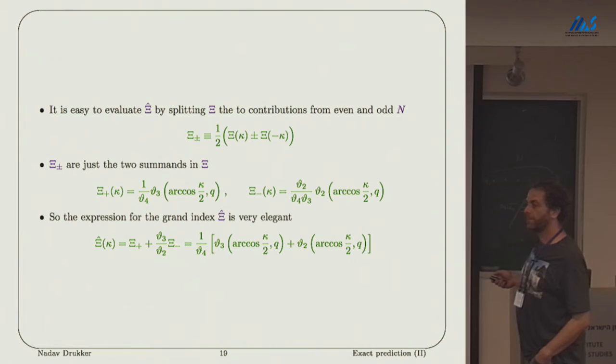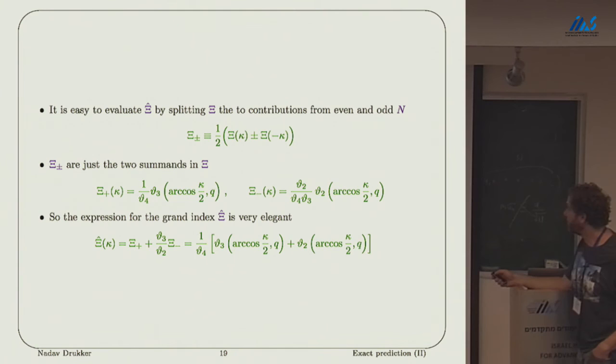Even this pre-factor in front here cancels, and I just get a sum of two theta functions. This is the generating function for all. In this case I don't have a flavor fugacity. In general, for what I will do later for a circular quiver, we have some results as long as the sum of all the flavor fugacities vanish. But for N equals 4 there is only one, so we need it to vanish.